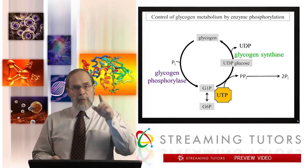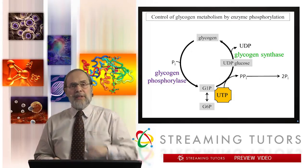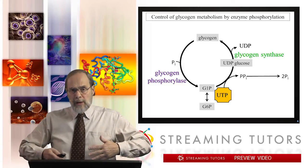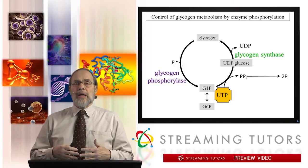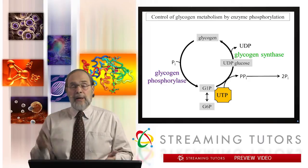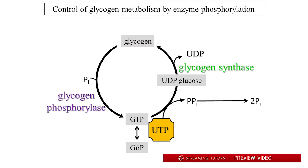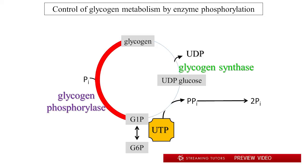With this substrate cycling system, what you really want to do — just as we were looking at in the case of cycling between fructose 1,6-bisphosphate and fructose 6-phosphate in control of glycolysis — you want to push it in one direction or the other. That is, you want to push it either towards synthesis or toward degradation.